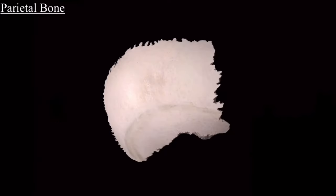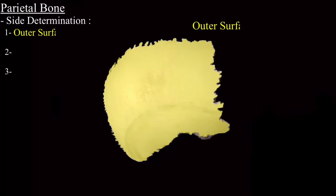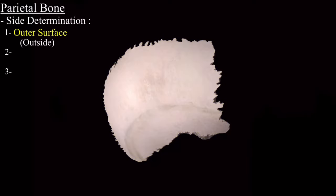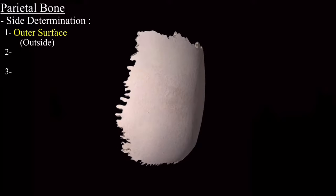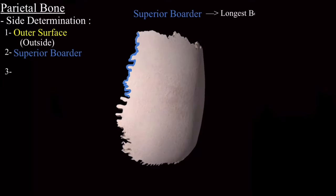First we will discuss the side determination of the parietal bone. For side determination you have to remember three main points. First, the outer surface is convex in nature and it should be on the outside. Second, this is the superior border — it is the longest of all the borders and it should be on the medial side.